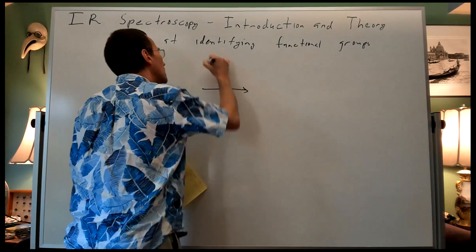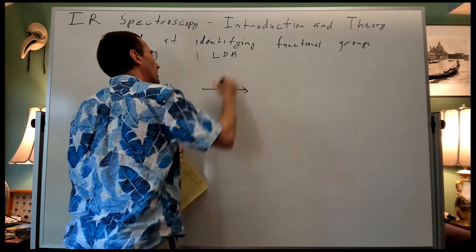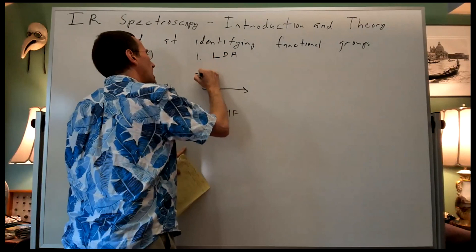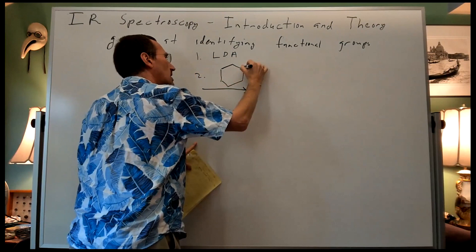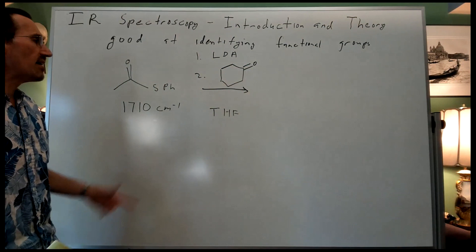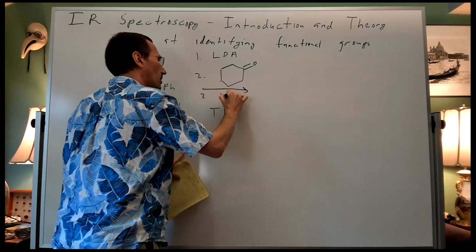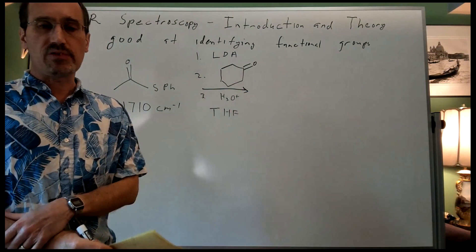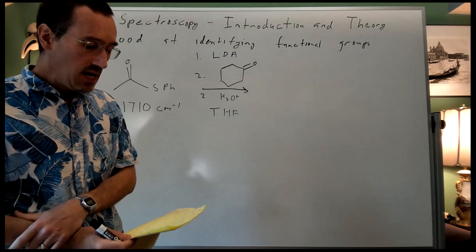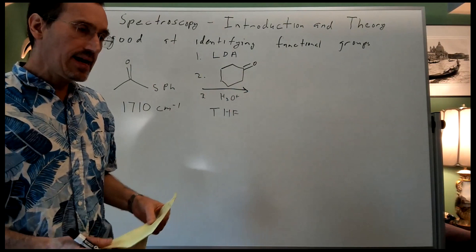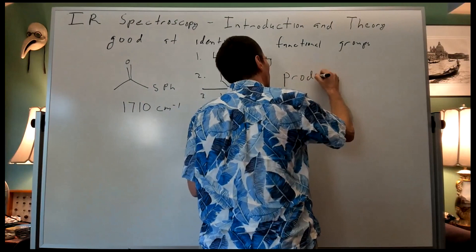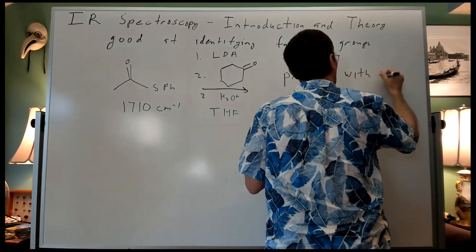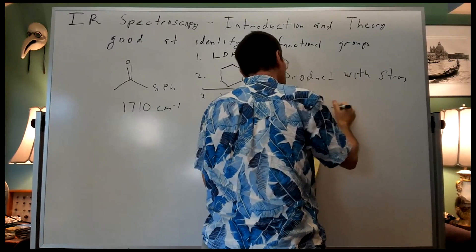I was trying to do some aldol chemistry. I treated my thiol ester with LDA in THF, then added a carbonyl compound — cyclohexanone, a ketone — and finally did an aqueous workup. After a TLC that generated a single new spot, IR is probably the first tool you should be reaching for. I got a product with a strong band at 1820 wave numbers.